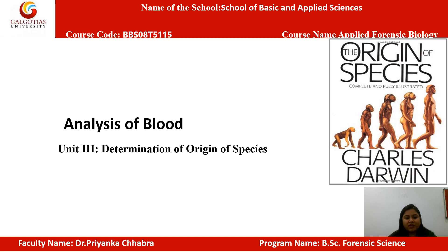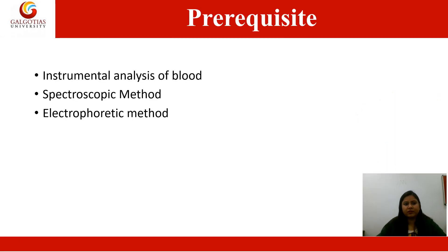Our topic is Determination of Origin of Species from Blood. We will discuss how the analysis of blood can be done using different instruments — specifically the spectroscopic technique and the electrophoresis technique.